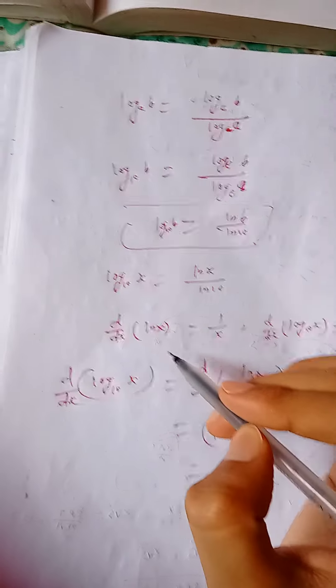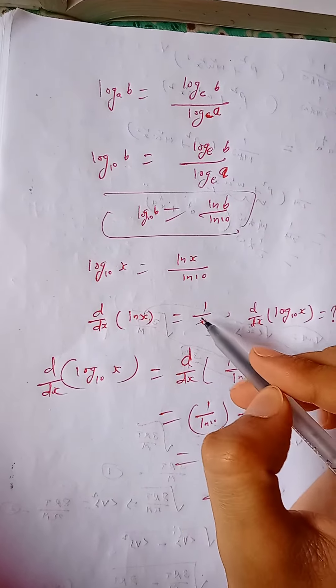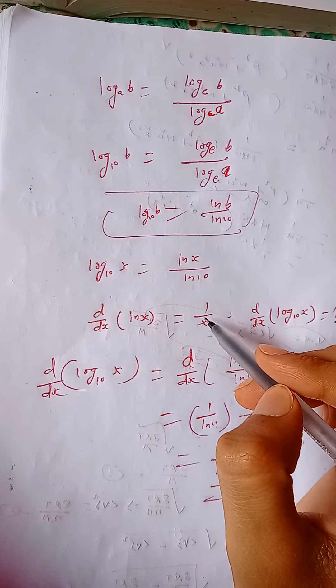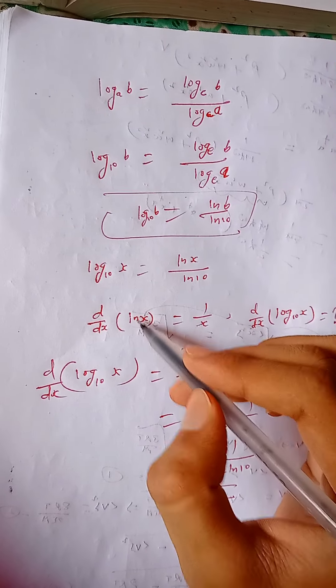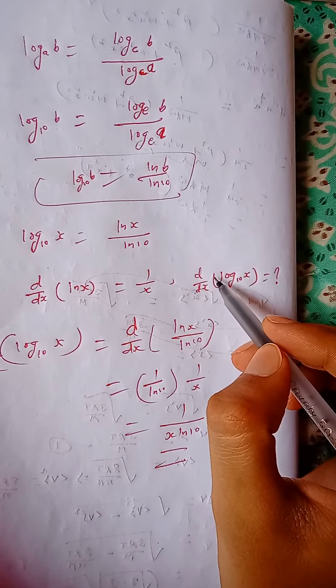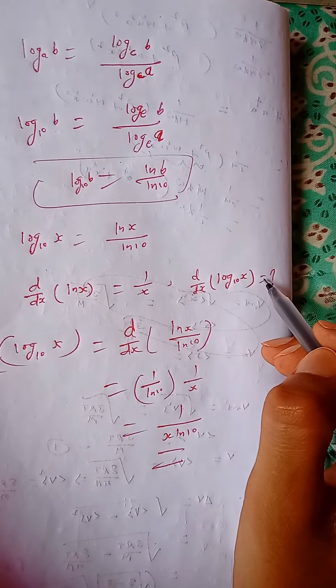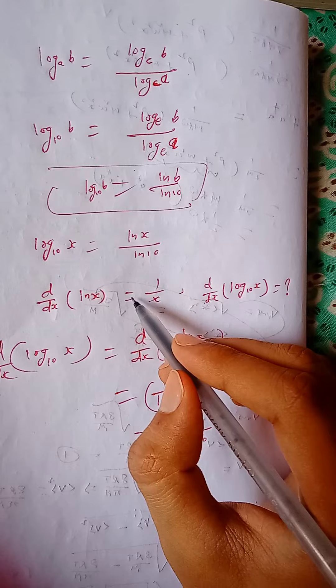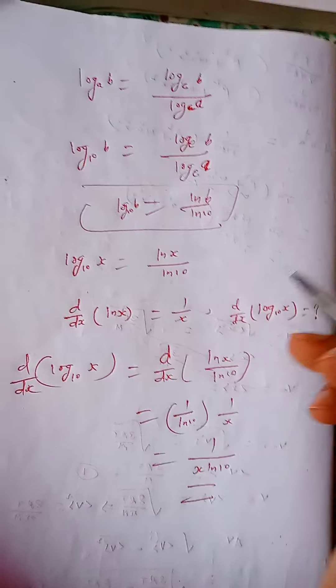We know the derivative of ln x is 1 by x. ln x means log of base e, alright. Is the derivative of log of base 10 x same as this one? Answer is no. Where is the reason?